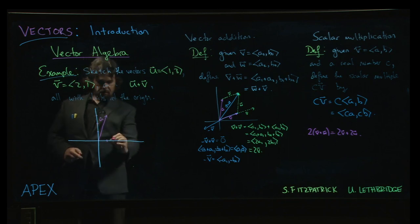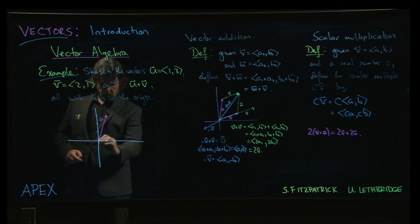The vector v, 2, 1, over 2, up 1. Looks something like that.